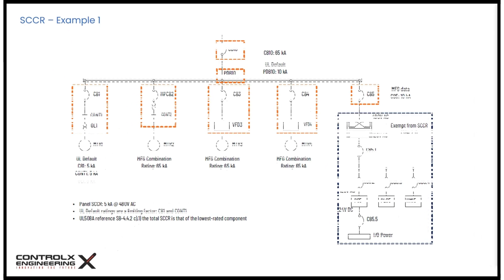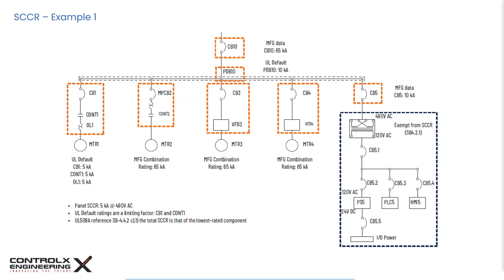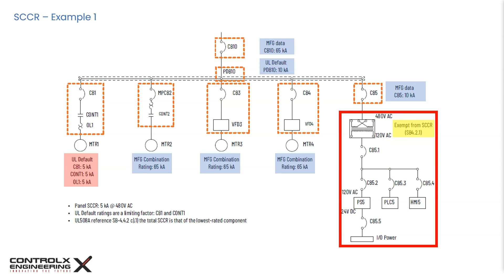These examples are taken from an Allen-Bradley publication. The first wiring diagram shows a motor control circuit with breakers, overload protection devices, and contactors on the 480V side, as well as 120V and 24V circuits after a step-down transformer. Steps 1 and 2 identify component SCCRs and current limiting devices. Per UL 508A paragraph SB 4.2.1, the low-voltage section is exempt from SCCR. Per paragraph SB 4.4.2, the lowest component SCCR determines the overall panel SCCR — in this case, motor 1's circuit with CB1 and contactor 1 having ratings of 5 kA — so the panel SCCR is 5 kA at 480V.